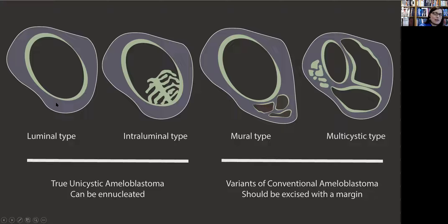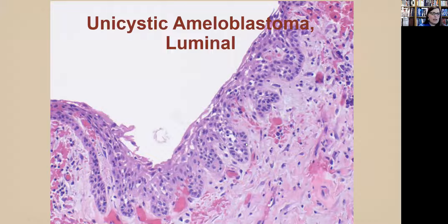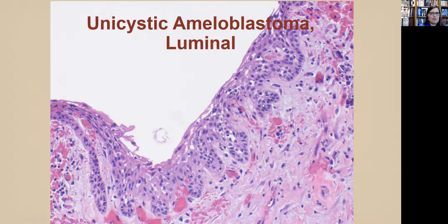There are different types: luminal, intraluminal (with epithelial growths within the lumen), and mural (with epithelium growing into the connective tissue wall). As soon as you have epithelium growing into the wall — the mural type — it needs to be treated with a margin or with closer follow-up. It is important to inform your surgeon when they have a mural type of unicystic ameloblastoma. Here is the luminal type, with stellate reticulum and some peripheral palisading — an architecture you would not expect with a dentigerous cyst.